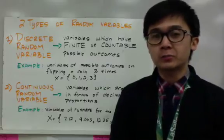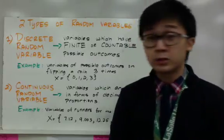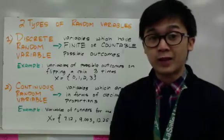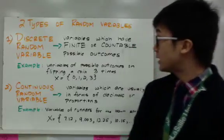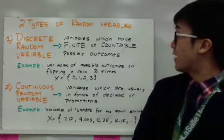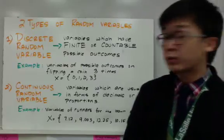We have two types of random variables. The first type of random variable that we've discussed before is a discrete random variable, which by definition are variables which have finite or countable possible outcomes.